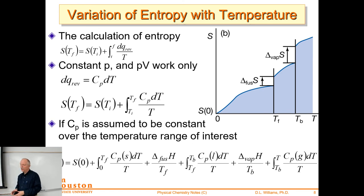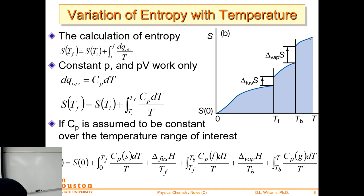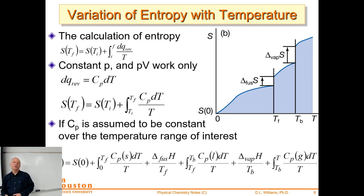We can visualize entropy changes at phase transitions as abrupt jumps in an entropy vs. temperature graph. Heating a solid: entropy rises gradually, then a big jump at the melting point (solid to liquid), then rises again through the liquid, then an even larger jump at the boiling point. After boiling, you're just heating the gas. If you know the heat capacities for solid, liquid, and gas, and the transition enthalpies, you can integrate from zero entropy at zero Kelvin up to any working temperature.